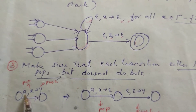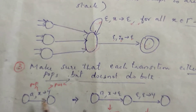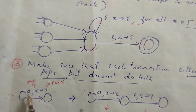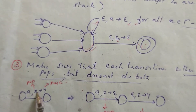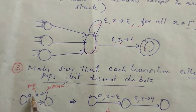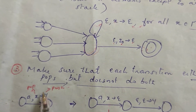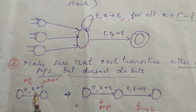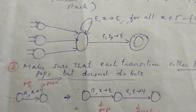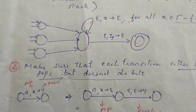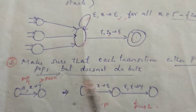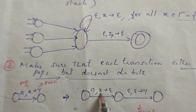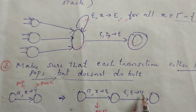Make sure that each transition either pushes or pops but doesn't do both. Input symbol A — there is a transition. We have to do a transition. Input symbol A: we are popping x and we are pushing y. Then we have to do a split. We have to accept the string with a different effect. We split it. Then we push x and then push y.